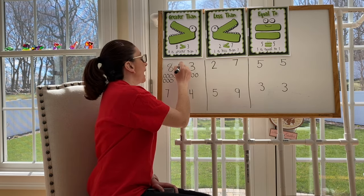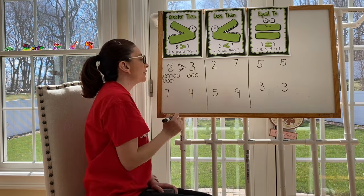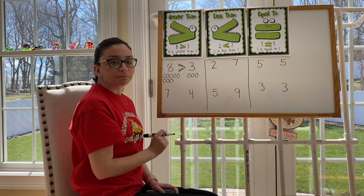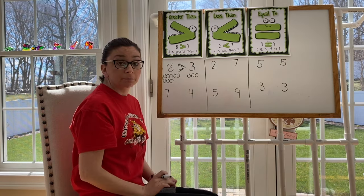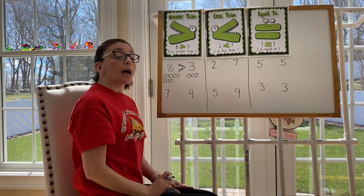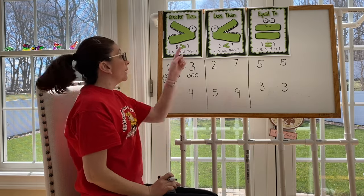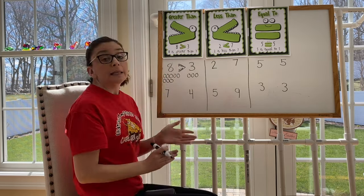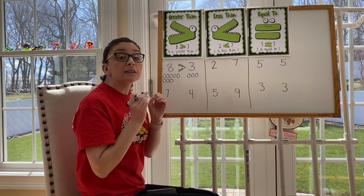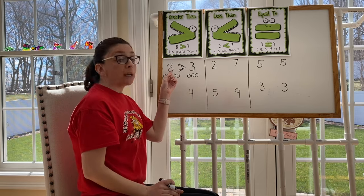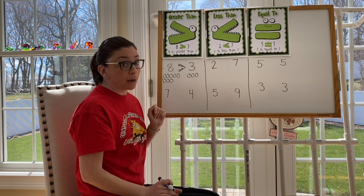I'm going to pretend that my alligator has teeth and he's going to eat that number eight. When we're talking about greater than, we look at the arrow and the open end always goes toward the bigger number, the greater number.